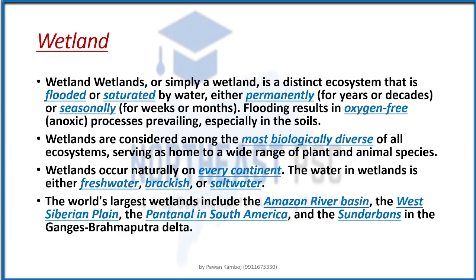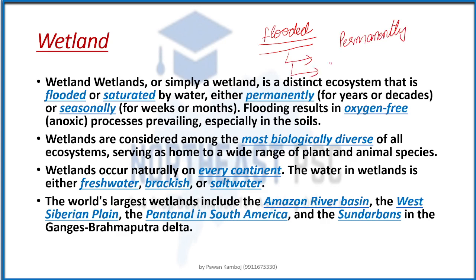Let's understand what a wetland is. A wetland is a kind of ecosystem which is saturated or flooded with water. This saturation can be permanent — lasting for years or decades — or it can be seasonal as well.